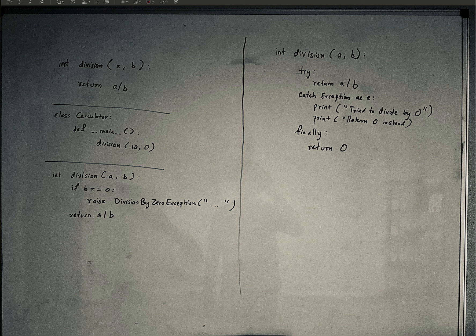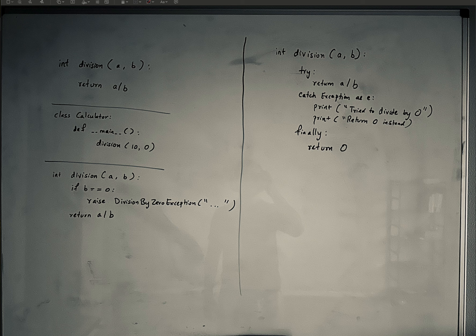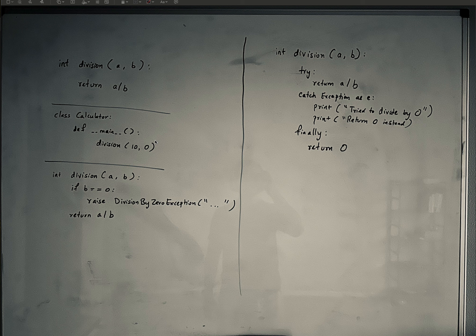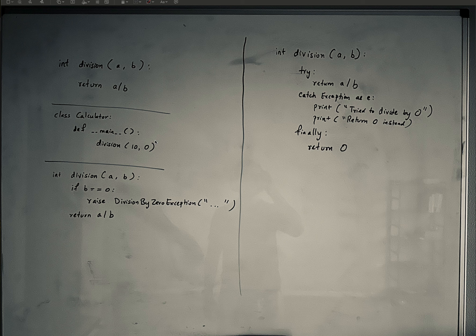We also have custom exceptions. These custom exceptions are exceptions that you would write yourself. So you as a programmer have the ability to write your own exceptions, and by writing these exceptions, you can call those custom exceptions.